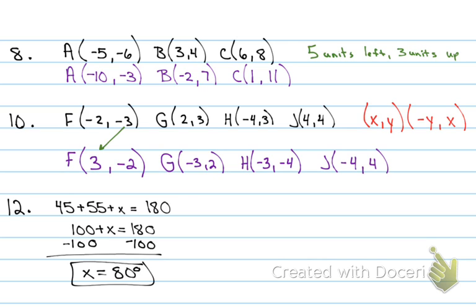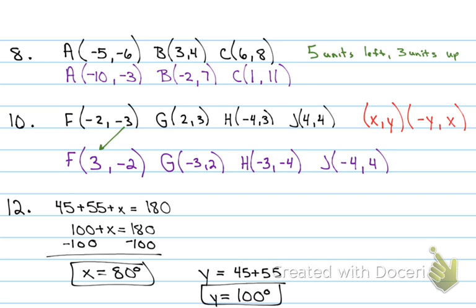There are two ways to find y. The easiest is to add the two non-adjacent interior angles: 45 plus 55 equals 100. The second way: because x and y are on a straight line they're supplementary, so subtract x from 180 — 180 minus 80 also equals 100. Either way, the exterior angle measure is 100.